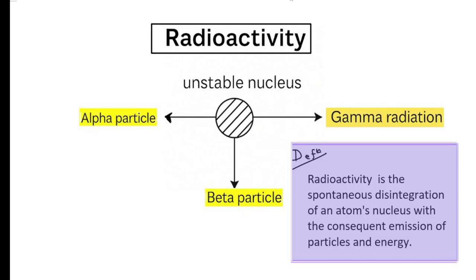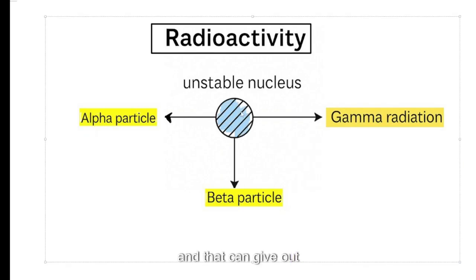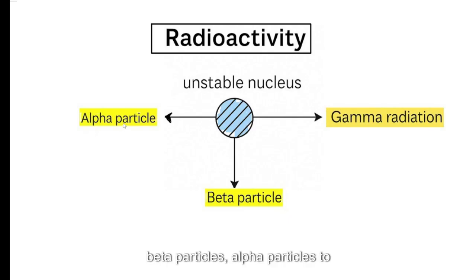So here you can see an unstable nucleus and that can give out gamma radiation, beta particles or alpha particles to become more stable.